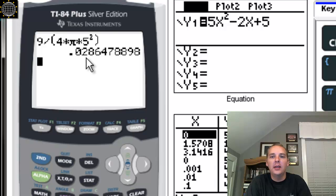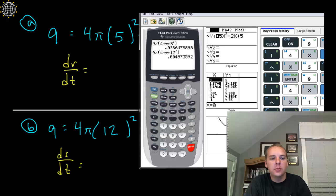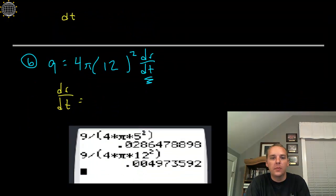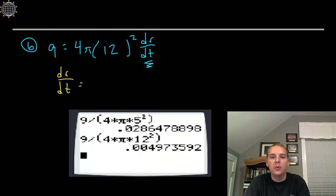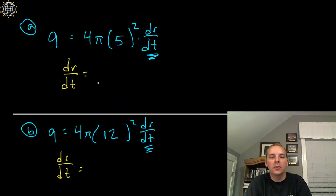Okay so we got 0.0286. And compare it to 9 divided by quantity 4 times pi times 12 squared. Okay so I'll snag this real quick, okay so here we go, 0.0286.